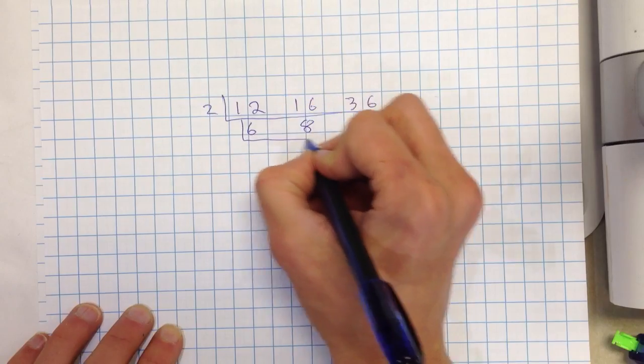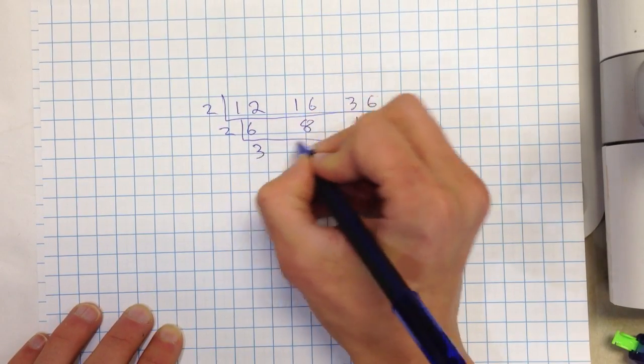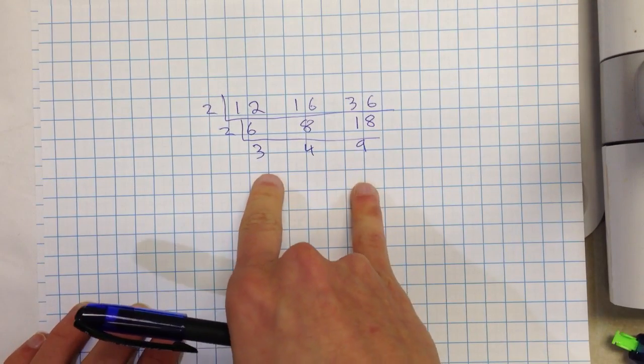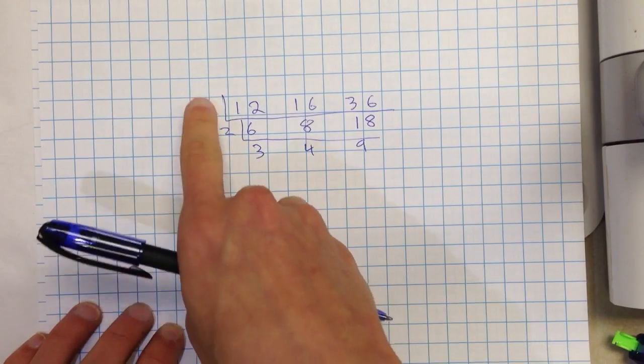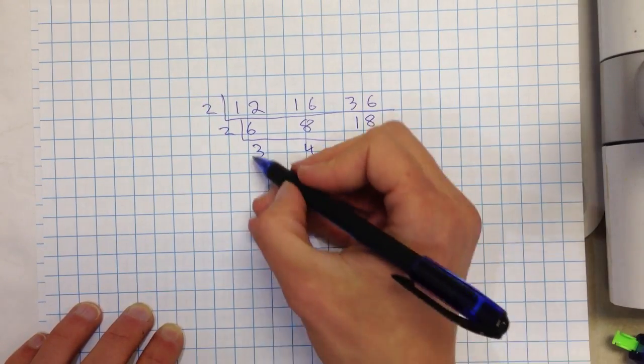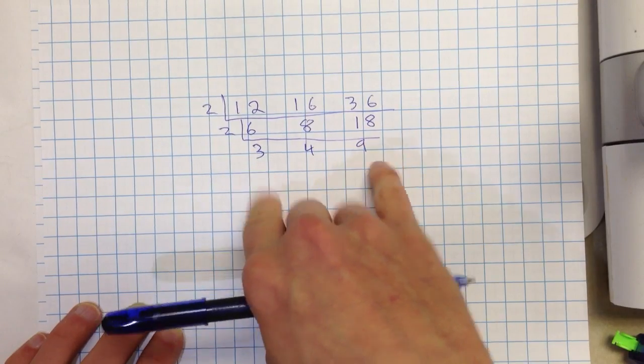Can I factor anything else? I can factor another 2. So I get 2, 3 there, 4 here, and a 9 here. Now this is where I normally would stop if I'm doing GCF because I have 2 times 2 equals 4. 4 is the greatest factor. However, if I'm doing LCM, I can keep going if I have at least two numbers that I can factor something out. So I can factor a 3 out of here and here.